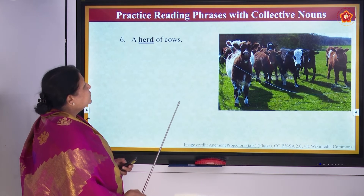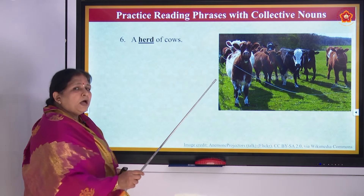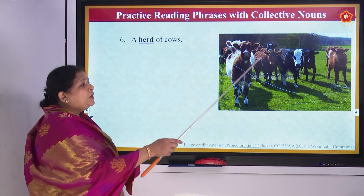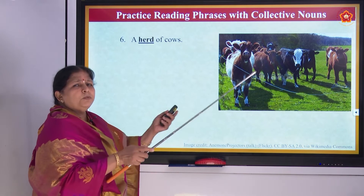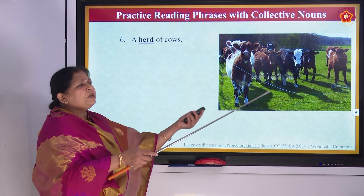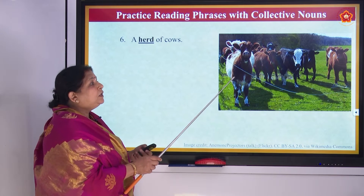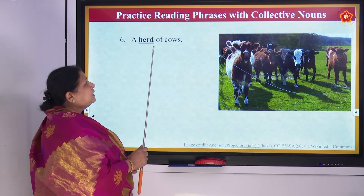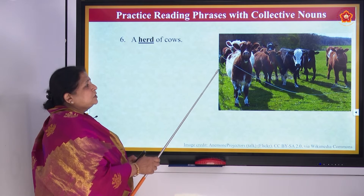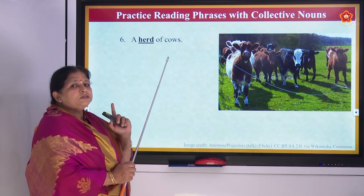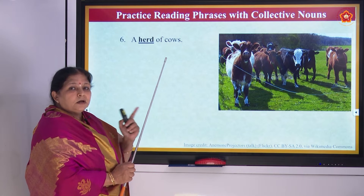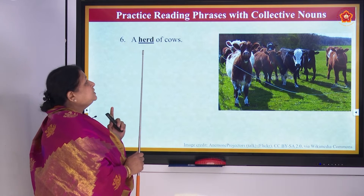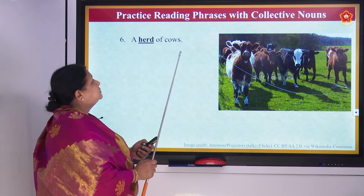Then we have herd of cows. One cow in the cow shed is okay, but when so many cows are grazing and going together, we say herd of cows. Note the spelling: it is H-E-R-D, not H-E-A-R-D, which is the past tense of 'hear.' It is herd — H-E-R-D — herd of cows.